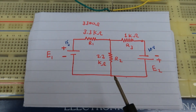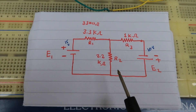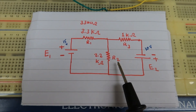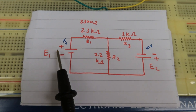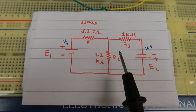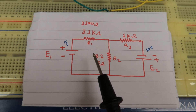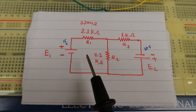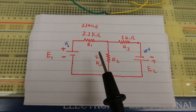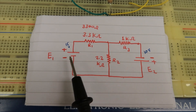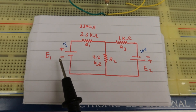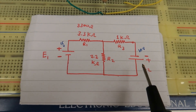The superposition theorem states that in any given circuit that has multiple sources, the voltage and the current produced in the circuit is equal to the sum of each voltage and current produced by each source individually.